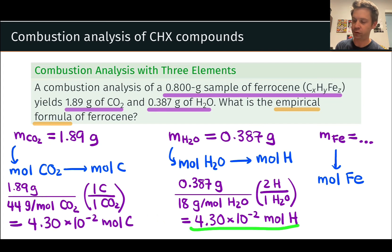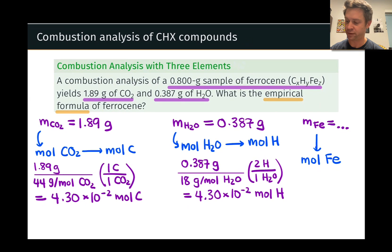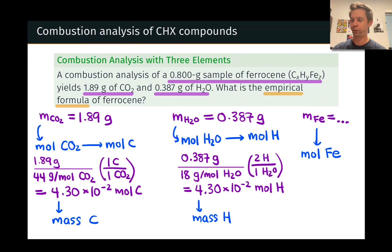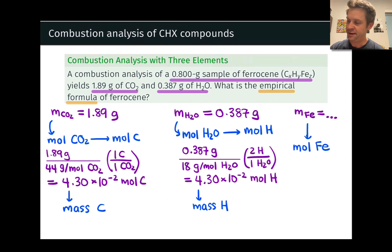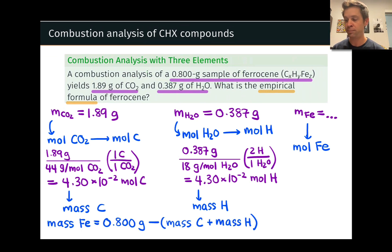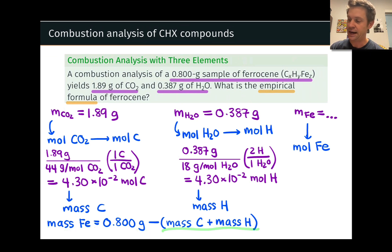We now know the number of carbon atoms and hydrogen atoms in the sample, and it's possible to determine the masses of these elements from this information. We can determine the mass of carbon by multiplying the moles of carbon by the average atomic mass of carbon, and do the same for hydrogen. The reason this is useful is that the sum of those two masses is everything in the compound except the iron. So to find the mass of iron, we take the total mass of the compound — 0.8 grams — and subtract the masses of carbon and hydrogen.